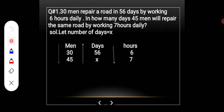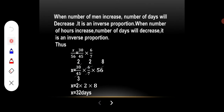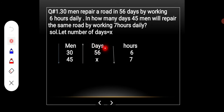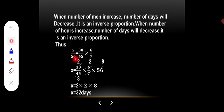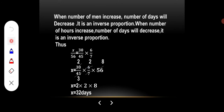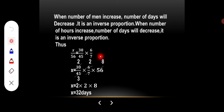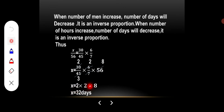When the number of hours increases, the number of days will decrease — it is inverse proportion. So we set up: x over 56 equals 30 over 45 multiplied by 6 over 7. So x equals 32.